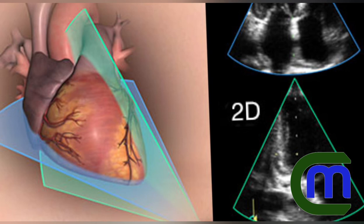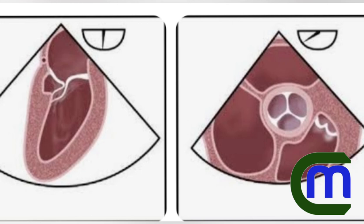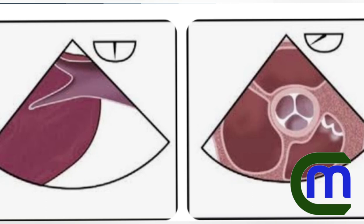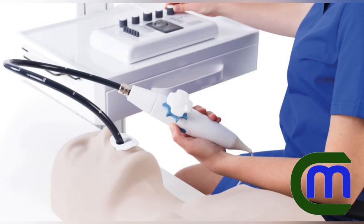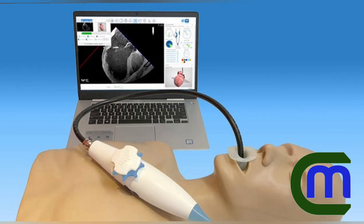TEE is a test that uses sound waves to make pictures of the heart muscle and chambers, valves, outer lining, as well as the blood vessels that connect to the heart. Doctors often use TEE when they need more detail than a standard echocardiogram. The sound waves sent to the heart by a probe in the esophagus are translated into pictures on a video screen.